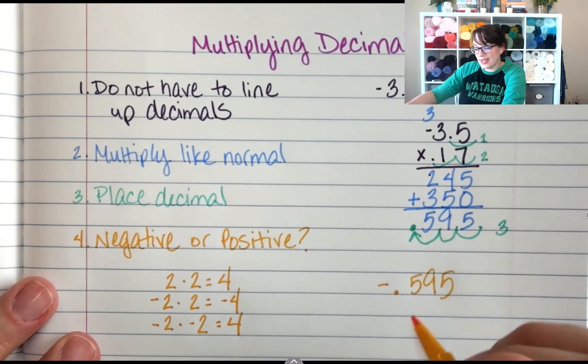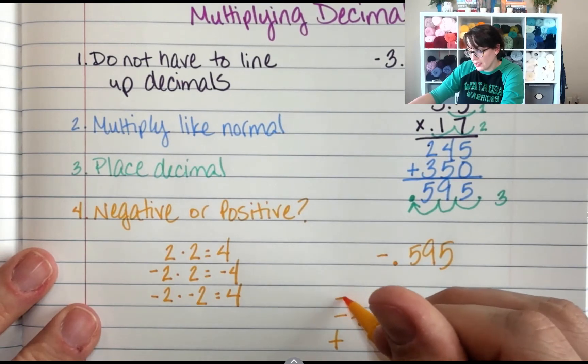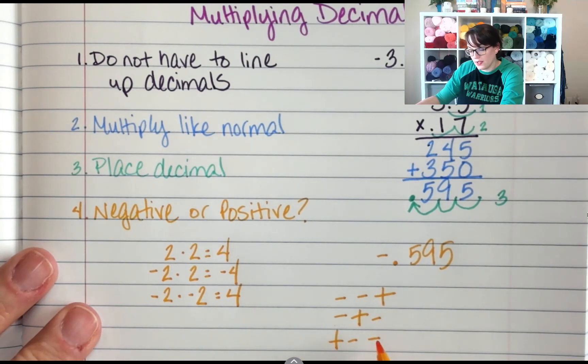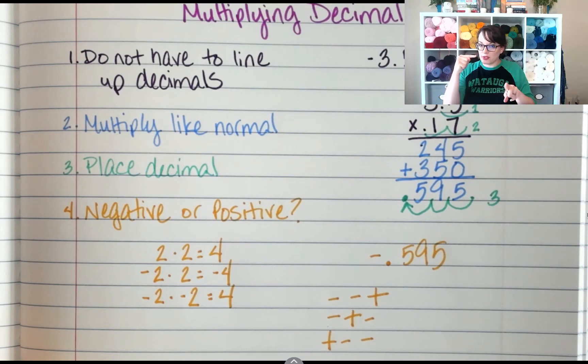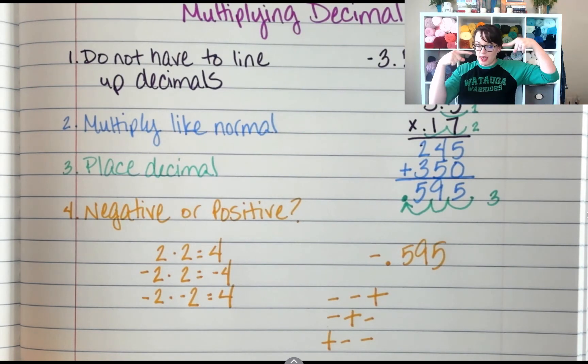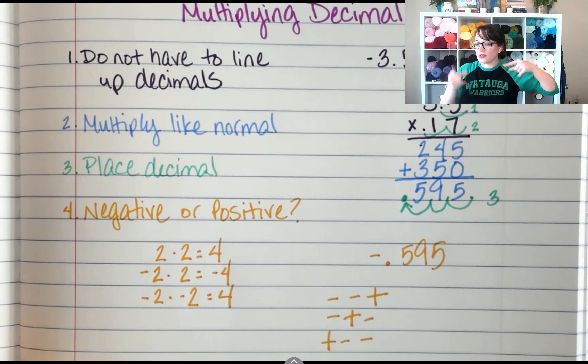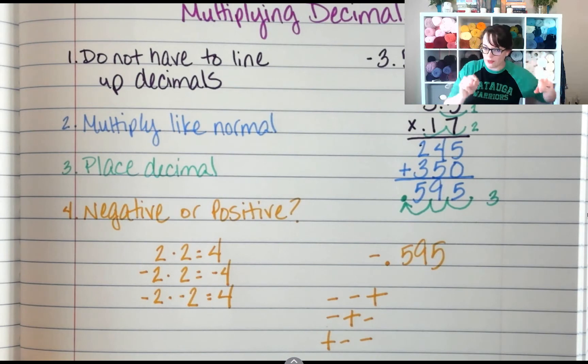Another trick you may have seen is the tic-tac-toe, where you have positive, positive, positive, and then the rest are negatives. And what this means is a negative times a negative is a positive. A negative times a positive is a negative. And a positive times a negative is a negative. When I was in 7th grade, I always remembered if I had one negative sign, it stays negative when I'm multiplying and dividing. If I have two negative signs and I'm multiplying, those two negative signs come together to make a positive sign. And then it keeps going. So one negative sign stays negative if you're multiplying or dividing. And if you have two negative signs, they come together to make a positive when you're multiplying or dividing.